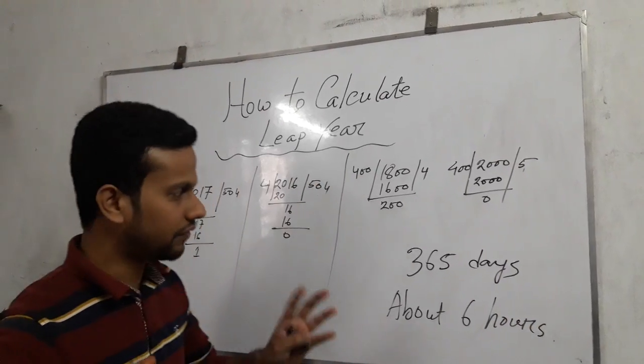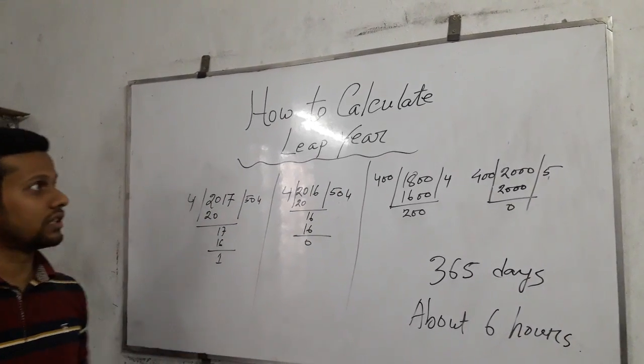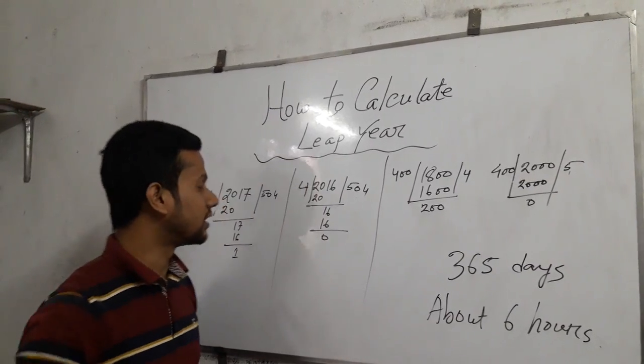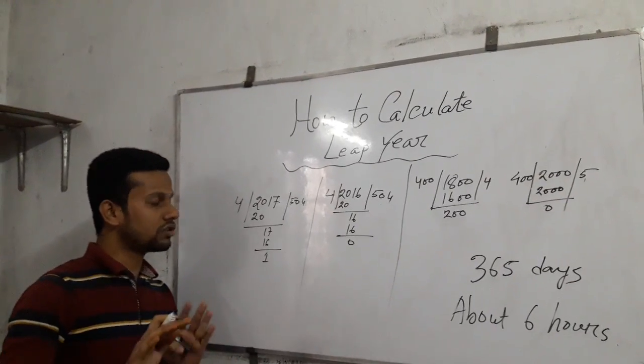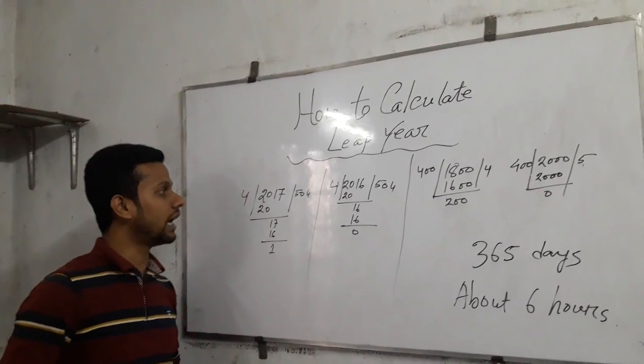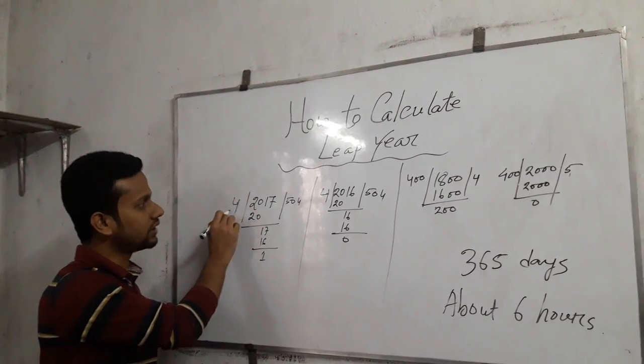So every four years is leap year. How to calculate a leap year? Now let's see. If any year has no zeros at last, then we have to divide it by four, divided by four.